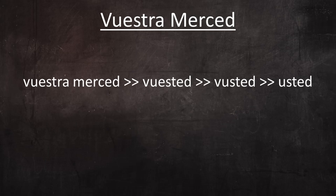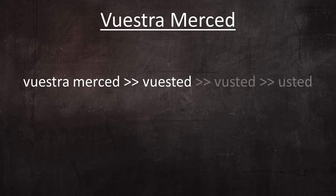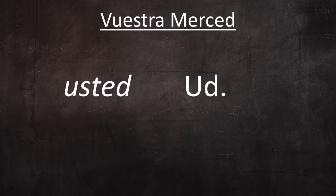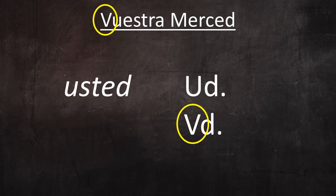The modern pronoun usted seems to have gone through this evolutionary process: from vuestra merced, to vuested, to busted, and eventually usted. For some reason, this version won out over all the others and during the course of the next century replaced them all, becoming common usage throughout the Spanish-speaking world. In modern writing, usted is usually abbreviated UD, but it's sometimes still abbreviated VED — a reminder of its ancient origin.